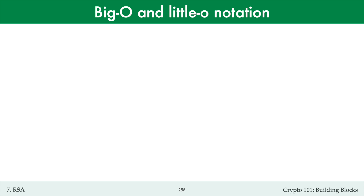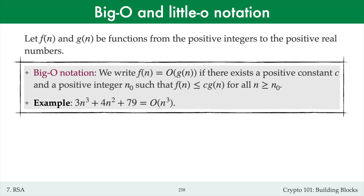I'll begin by reminding you of the big O and little o notation. Let f and g be functions from the positive integers to the positive real numbers. I'll say that f is big O of g if there exists a positive constant c and a positive integer n0, such that f of n is at most c times g of n for all n at least n0.